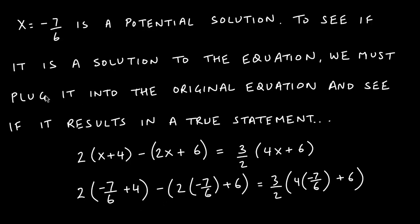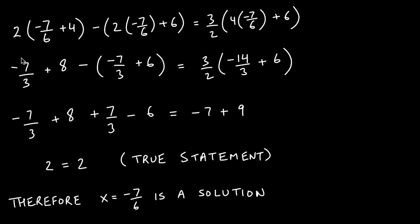Remember, this is only a potential solution until we plug it into the original equation and see if we get a true statement. If we plug negative 7/6 in for x in all three places, we can distribute the 2 and then the negative, and then the 3/2. Let's go step by step to avoid mistakes.